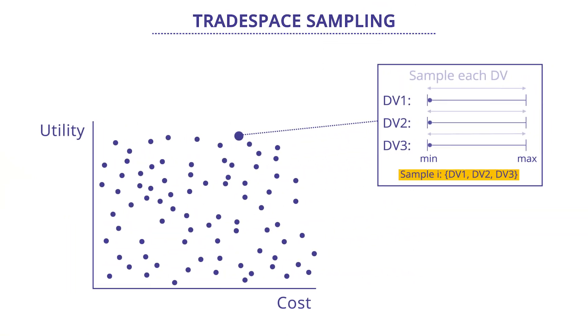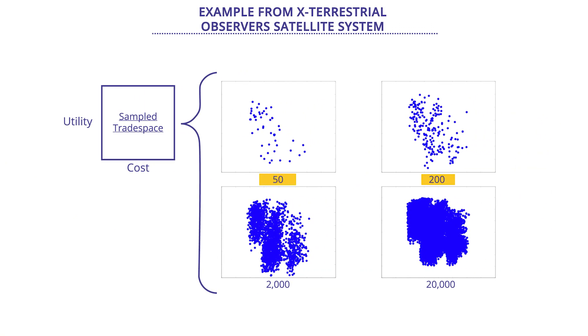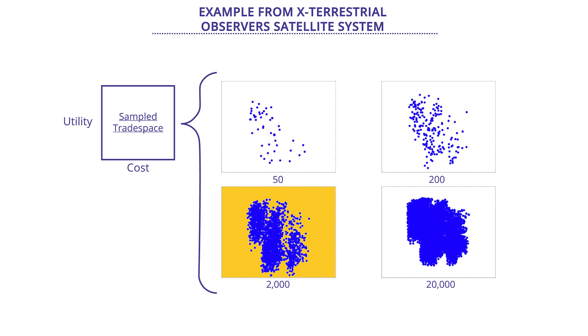One approach we recommend is flat probability random sampling. For this approach, every design vector element is treated as equally likely to take on every value across its range. One can then use a Monte Carlo approach to sample across flat probability distributions to generate an arbitrary number of samples. Consider the example for X-TOS, where we look at four different sampling levels — 50, 200, 2,000, and 20,000 — to see the impact on trade space insights. At 50 points, we don't really see many patterns. By 2,000 points, patterns are emerging in terms of clusters of design alternatives and a Pareto front. By 20,000 points, the Pareto front is well defined, as are various groups of designs. The best sampling strategy for a given trade space is a matter of expert opinion and must be determined iteratively based on available resources and the trade-off of depth versus breadth.